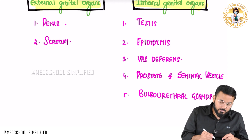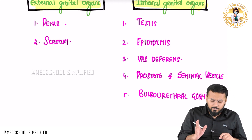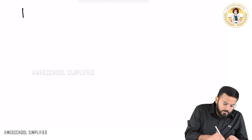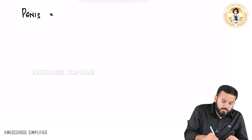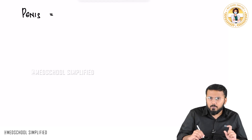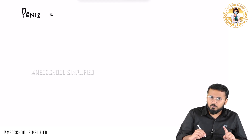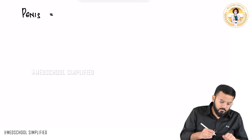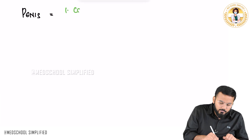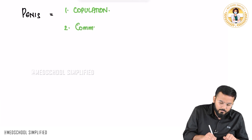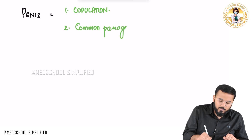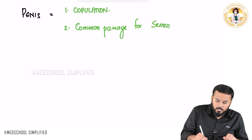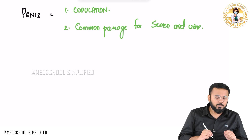When it comes to the penis, penis is the only common outlet for both passage of sperms and passage of urine. At the same time, penis is an organ that is responsible for copulation.